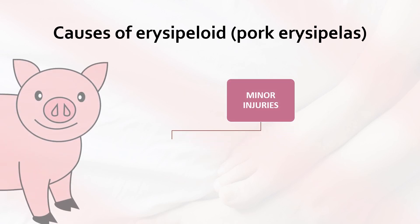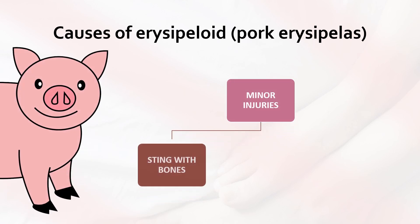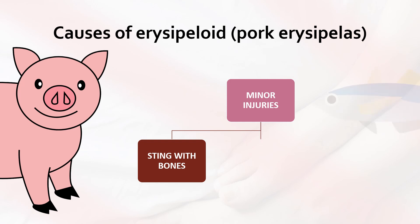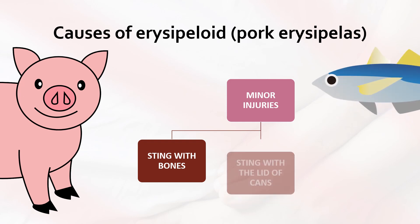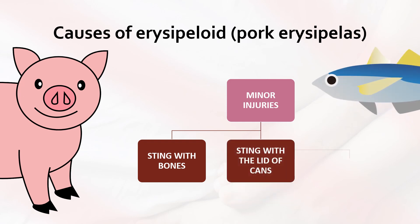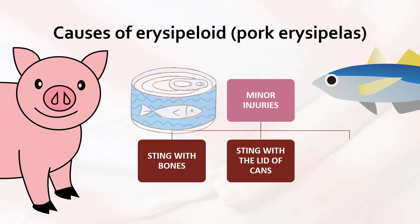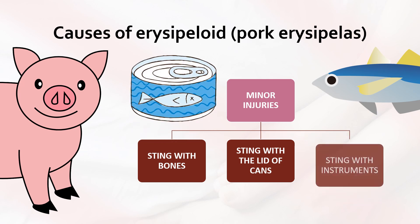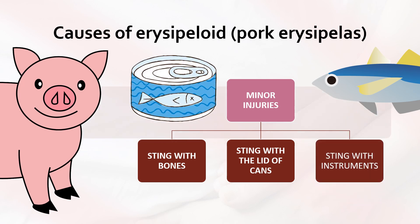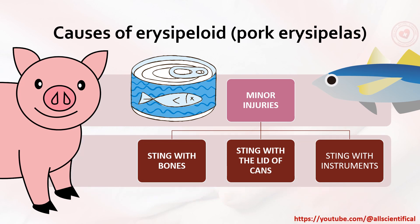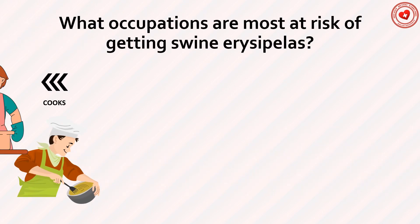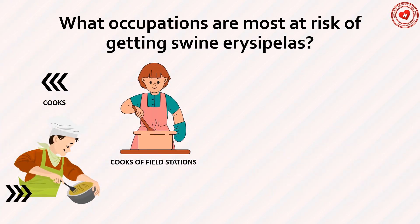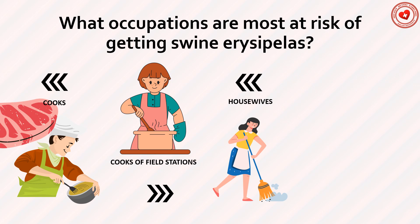Causes of erysipeloid (swine erysipelas). Erysipeloid usually develops on the fingers and hands of a person who has received minor injuries — stings with bones, stings with lids of cans, stings with instruments — while cutting pork or fish. For workers in the meat and fish industry, erysipeloid is an occupational disease.